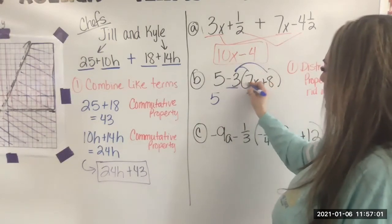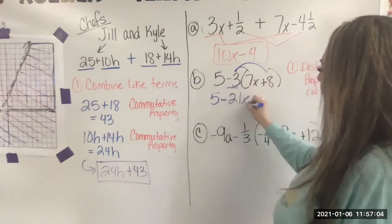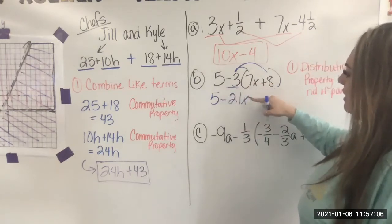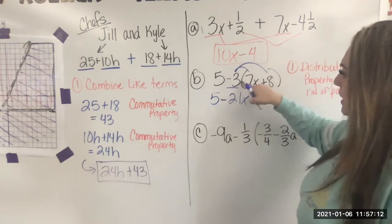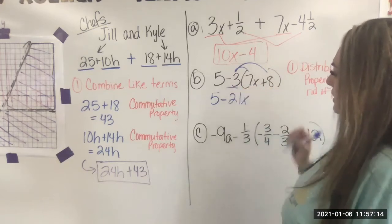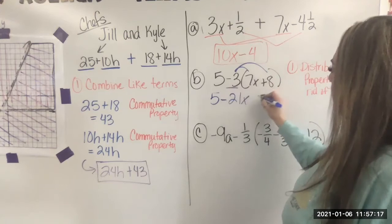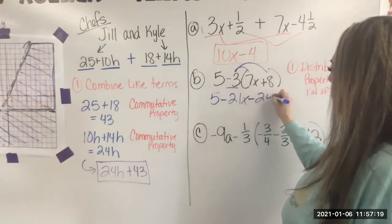Well, negative 3 times 7 is negative 21, but I can't forget the X. If I have seven X's, now I'm multiplying that. So now I have negative 21 X's. Negative 3 times 8 is negative 24.